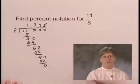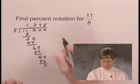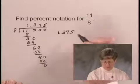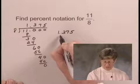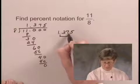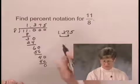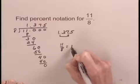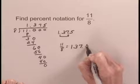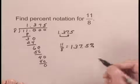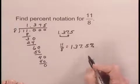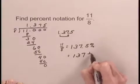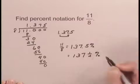And now we'll convert 1.375 to percent notation. The first thing that we do is to move the decimal point two places to the right, which would place it here, and then we write the percent symbol. So we would say that 11 eighths is equal to 137.5 percent. And we could also write this, since 0.5 is equivalent to one half, another way that we could write this is as 137 and one half percent.